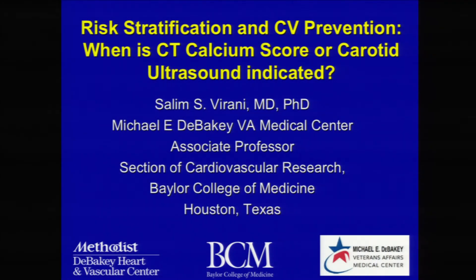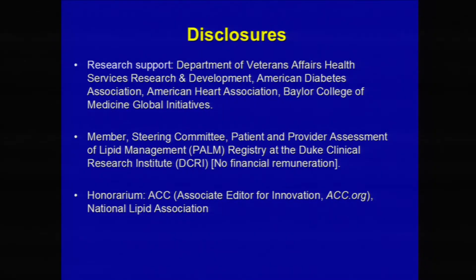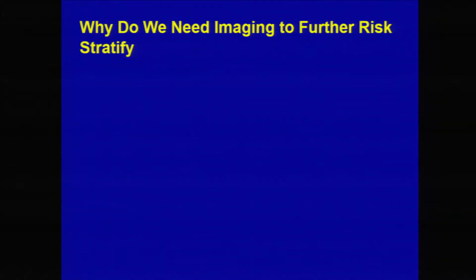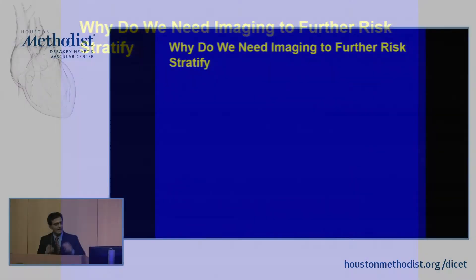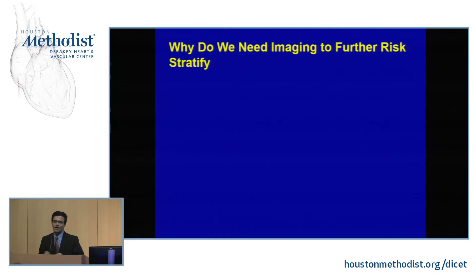Good morning, everyone. Thank you, Dr. Mamerian and Dr. Zagbe for the invitation. The topic I've been given is how do we use imaging for primary prevention in terms of risk stratification? These are my sources of research support and disclosures, none of which are related to the talk. The question is: why do we need imaging to further risk stratify our patients in primary prevention? These are patients that you and I see every day in our clinic, and we're trying to decide which patients should receive intensive medical therapy. Lifestyle is for everyone. If we are going to start statin therapy, aspirin therapy, aggressive blood pressure reduction — which patients should we really be focusing on? I believe this is where the field is moving, because this is where the money is.